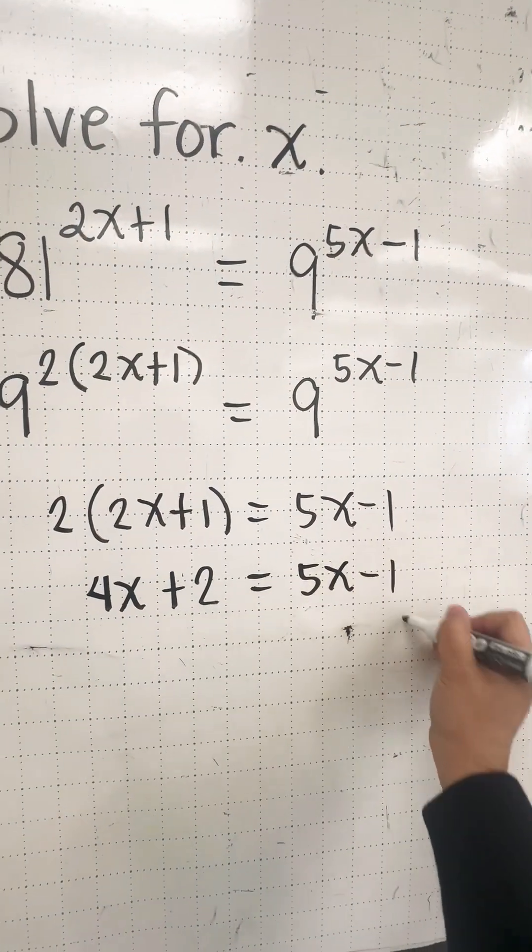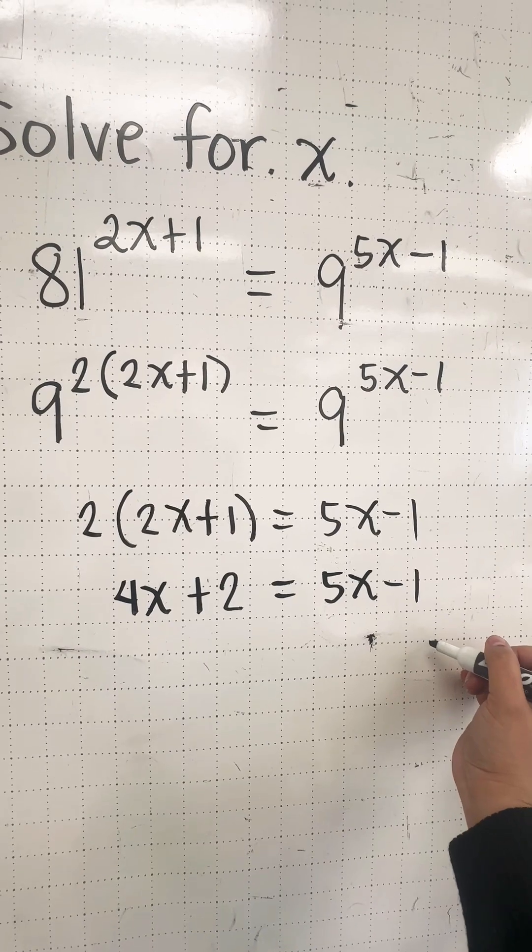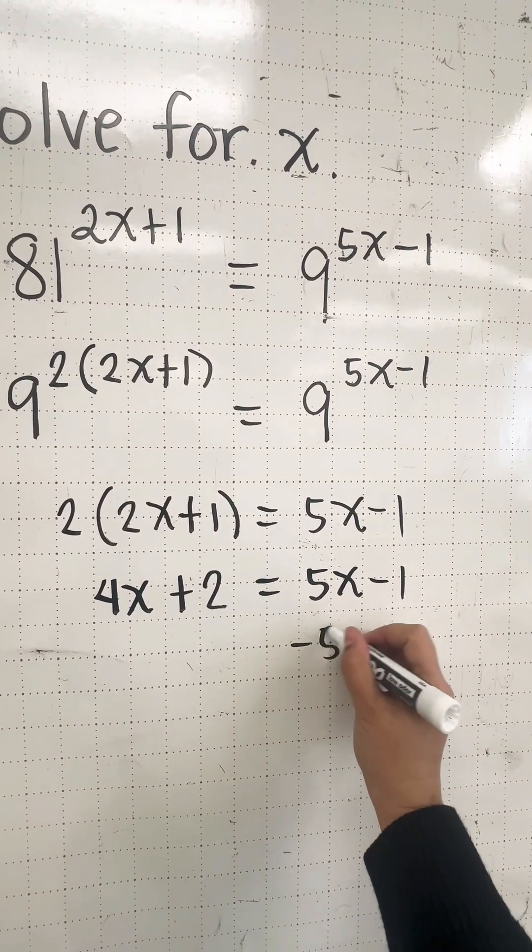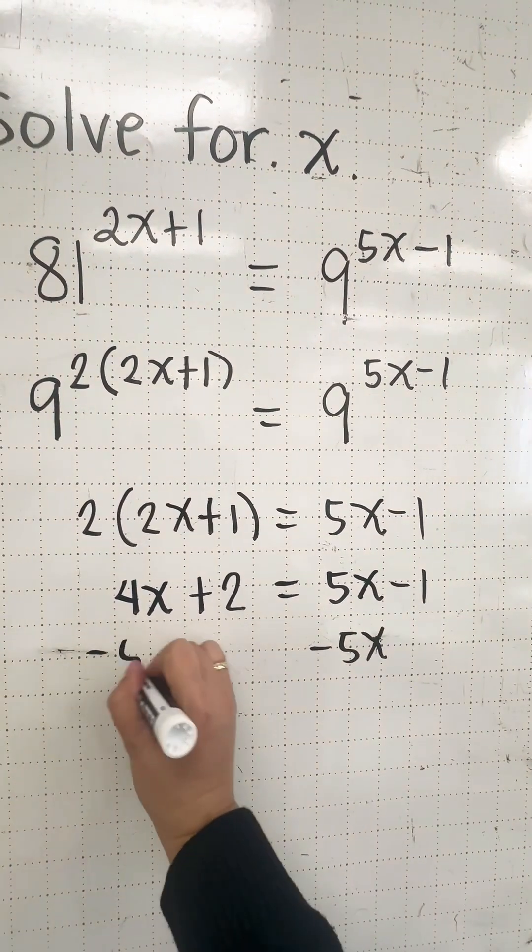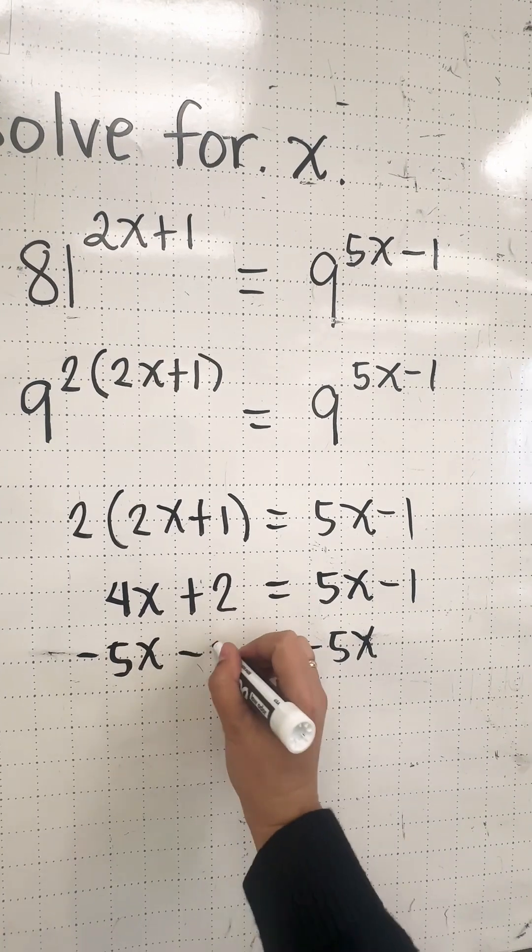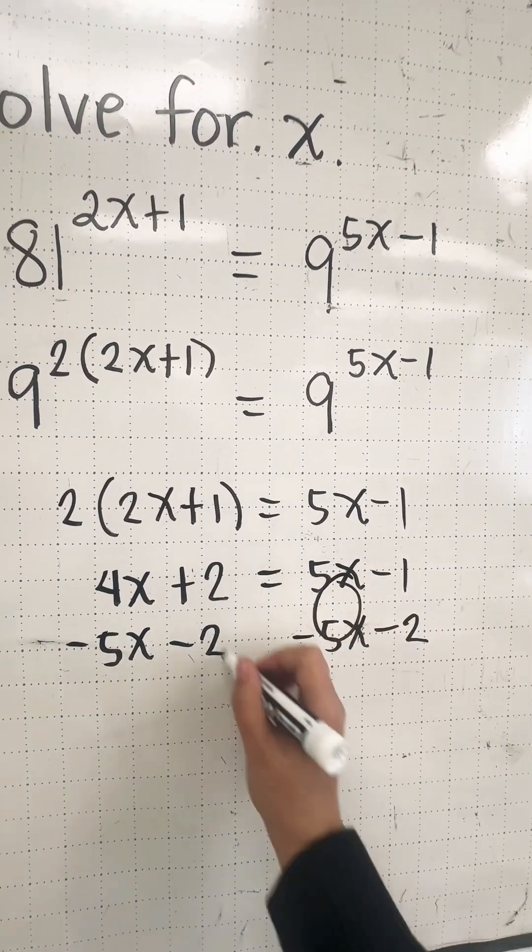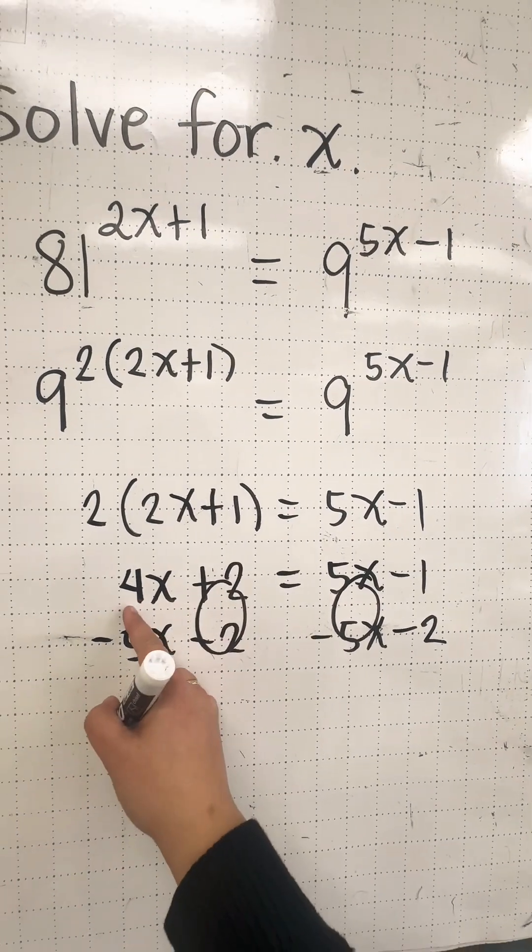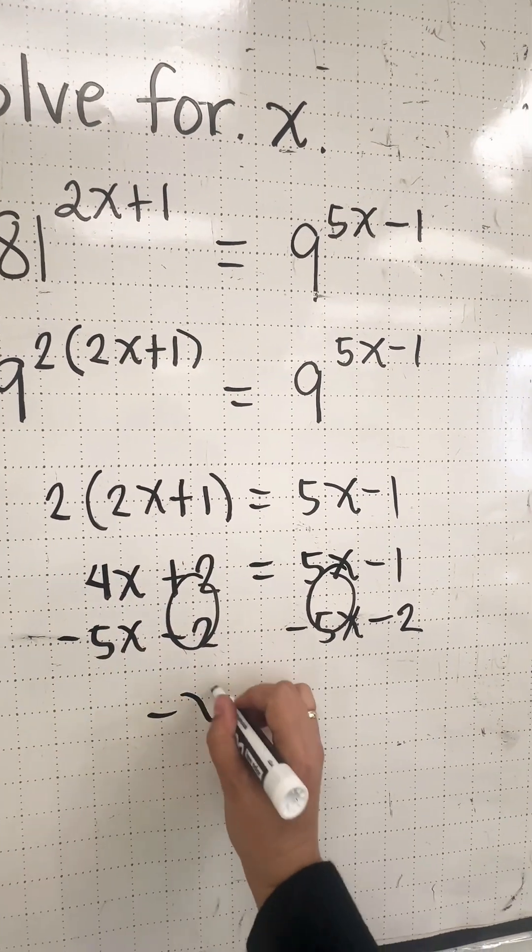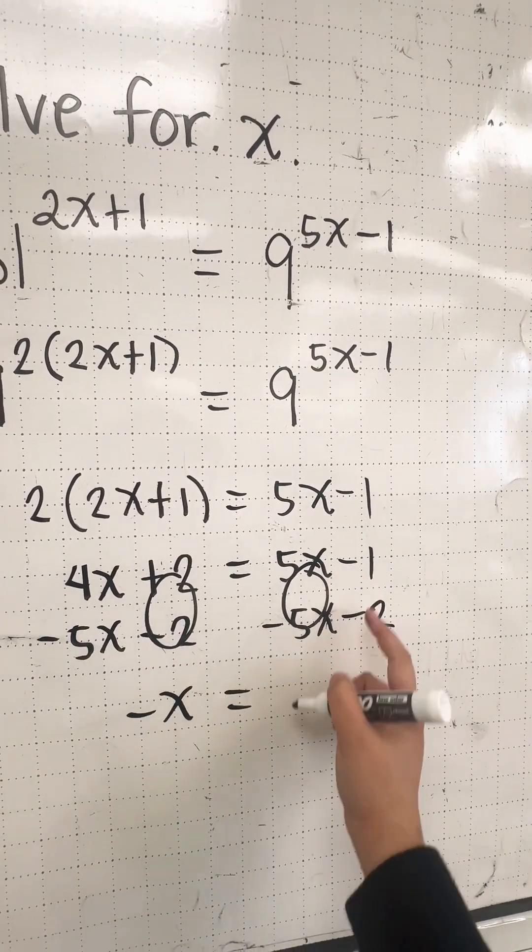Let's combine like terms by subtracting both sides by 5x and subtracting both sides by 2. So this is 0, this is 0. So 4x minus 5x, that's negative x, equals negative 1 minus 2, that's negative 3.